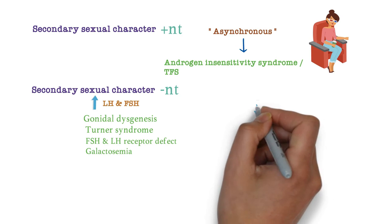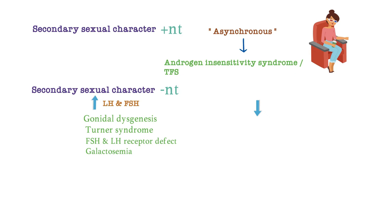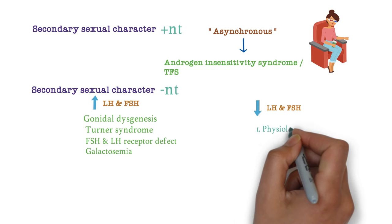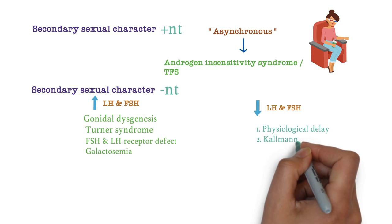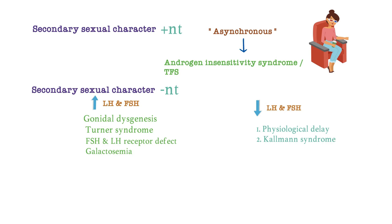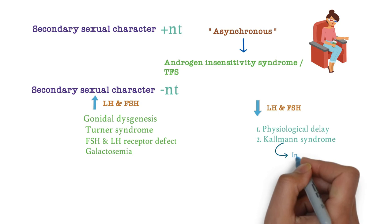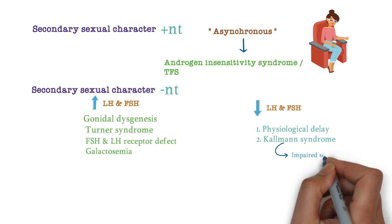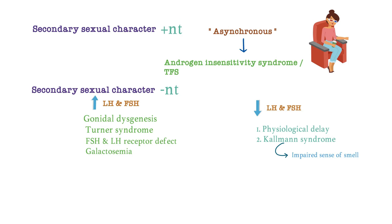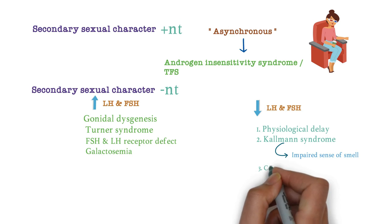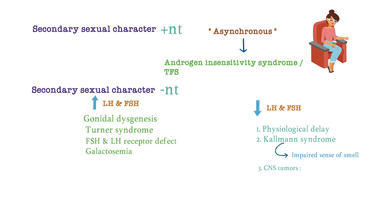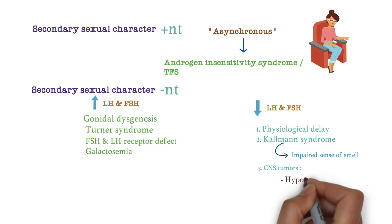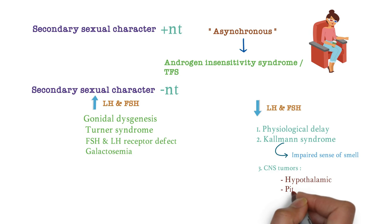If LH and FSH are low, there can be physiological delay or Kallmann syndrome, which is a form of hypogonadotrophic hypogonadism where you can also find impaired sense of smell. Other causes for low LH and FSH include CNS tumors such as hypothalamic or pituitary tumors, which result in low hormone levels. These are the possible causes for primary amenorrhea.